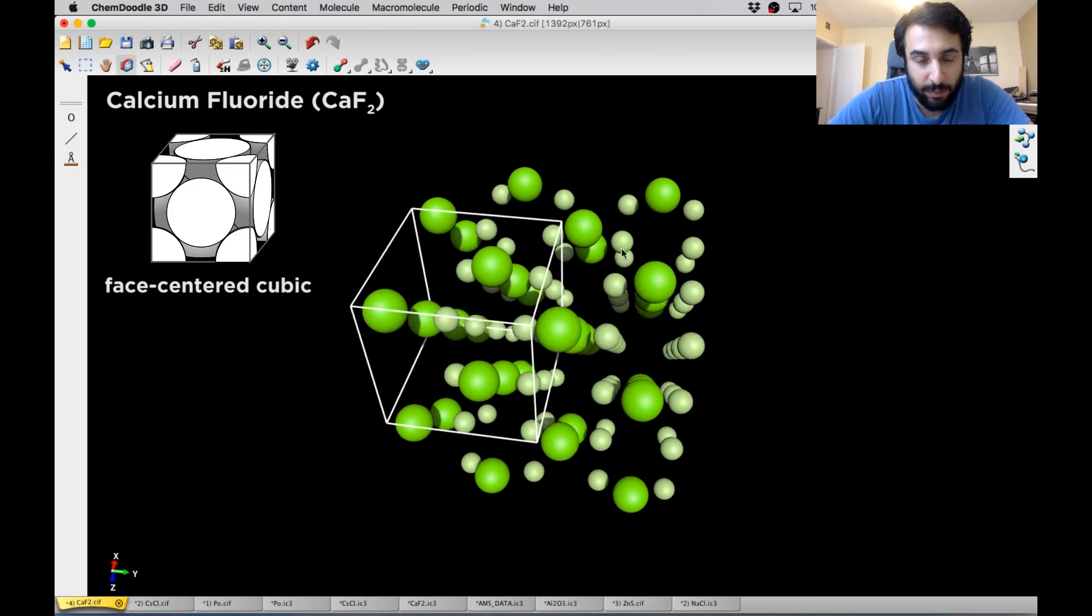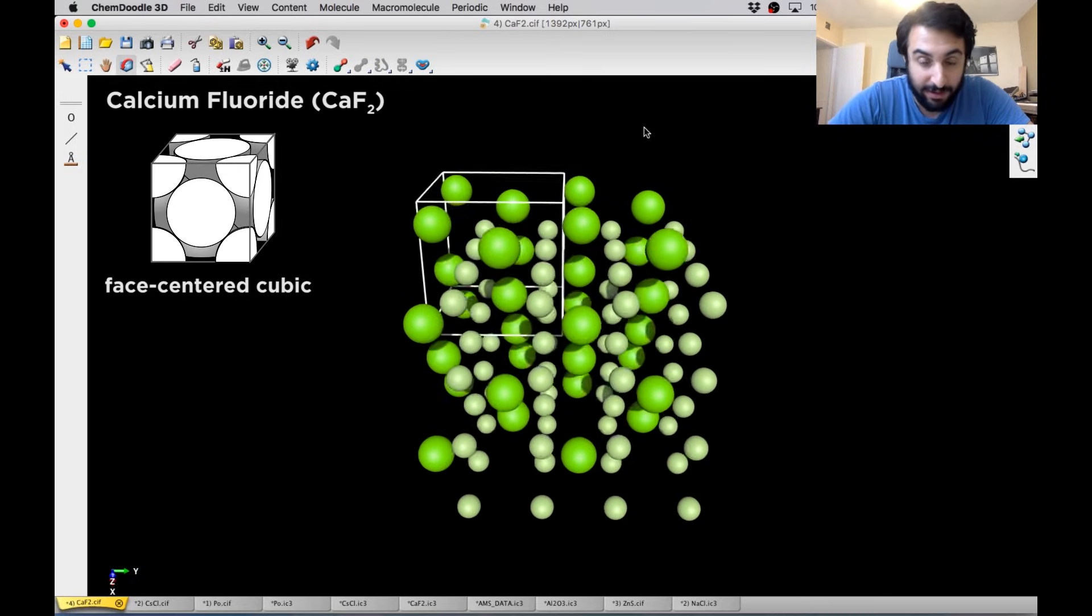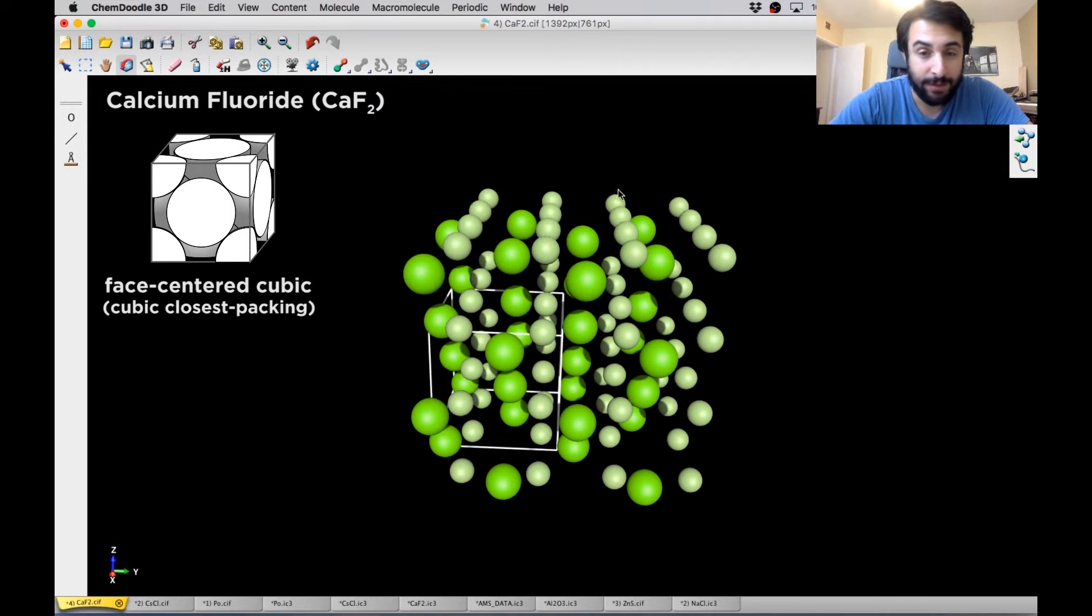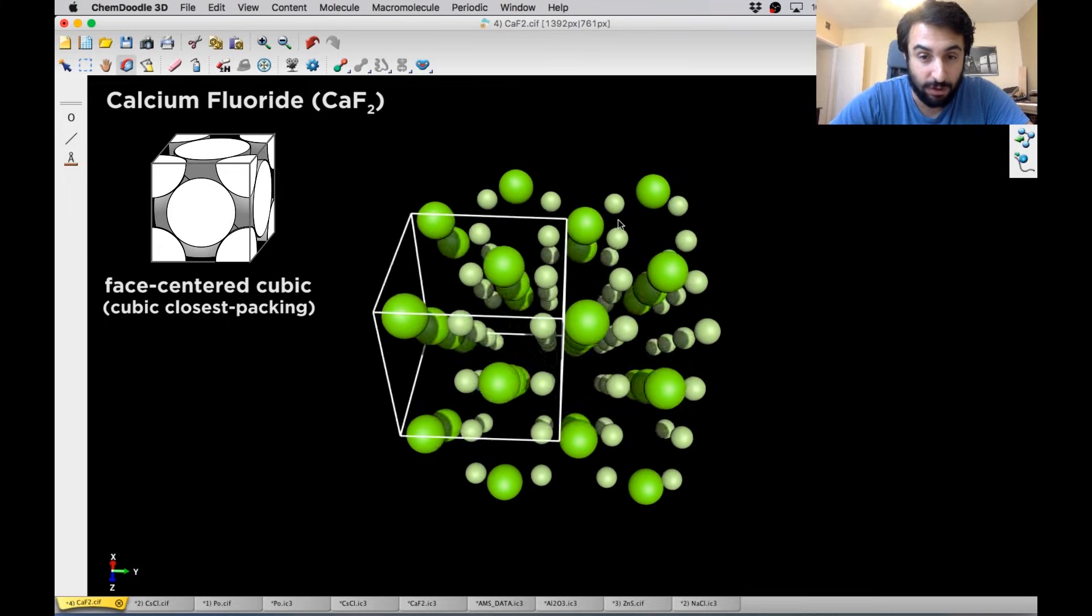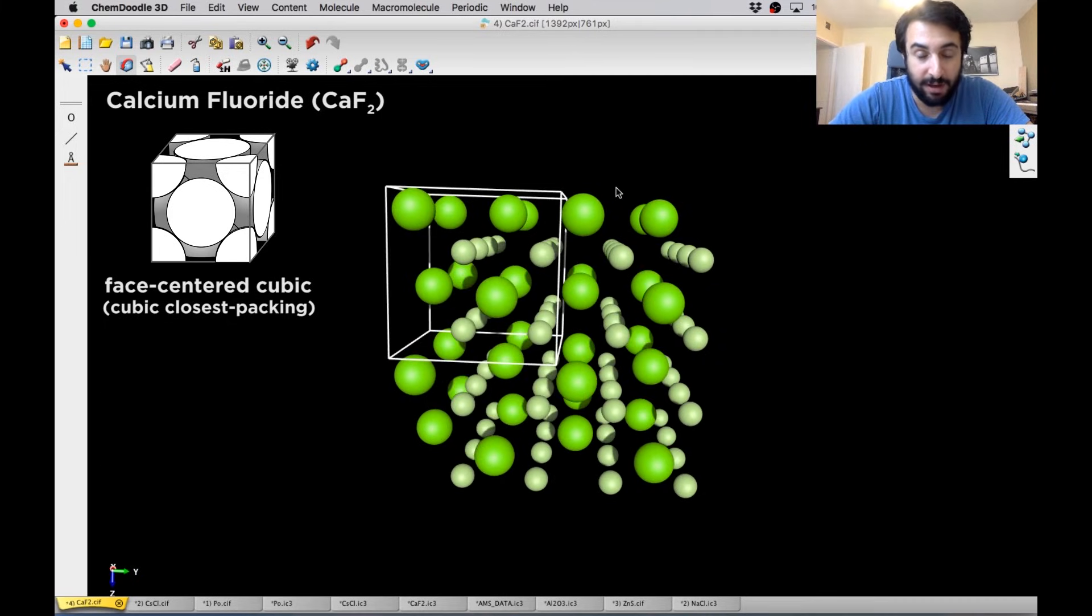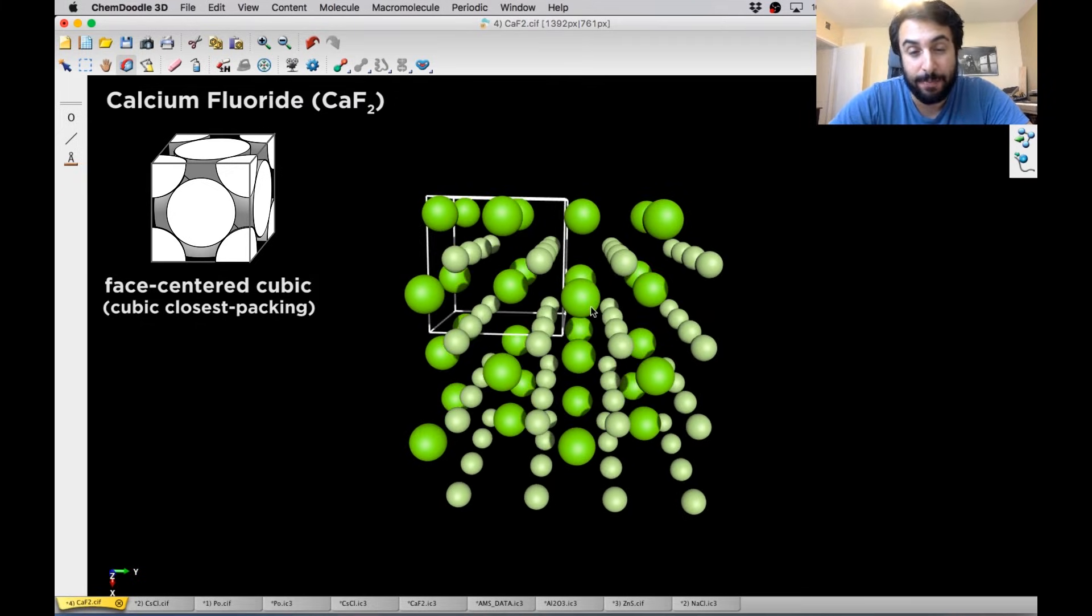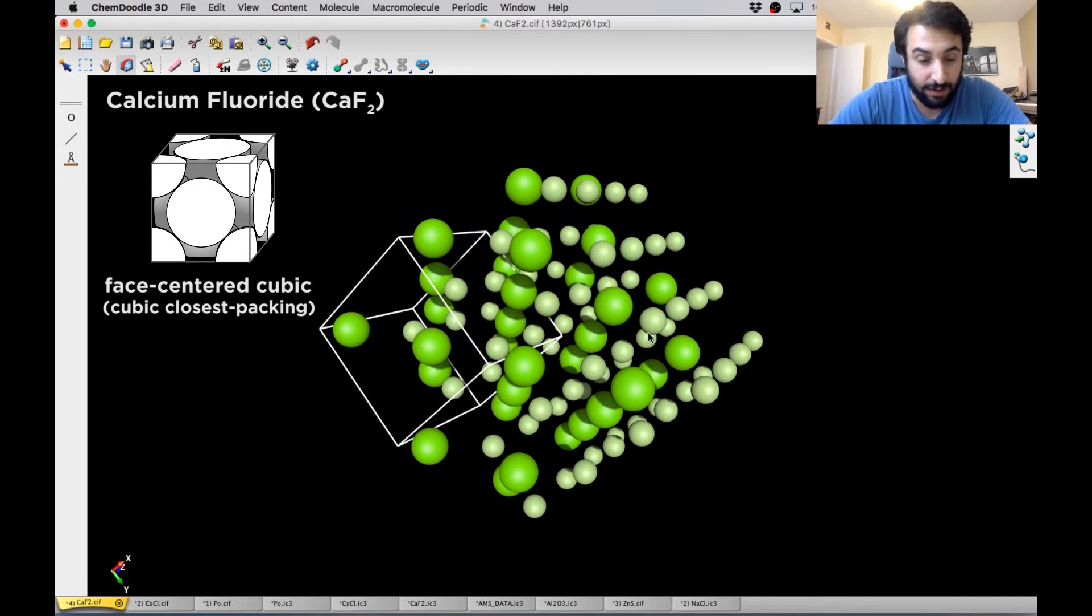And once again we saw previously that the anions were forming the face-centered cubic, also known as cubic closest packing. So that's another way of calling it with the face-centered cubic structure. And so earlier we saw the anions forming that structure. Now we're seeing the cations forming that structure. So once again it just depends on the relative sizes of the ions in terms of what these are going to do.